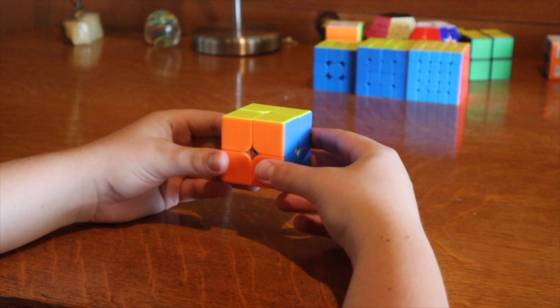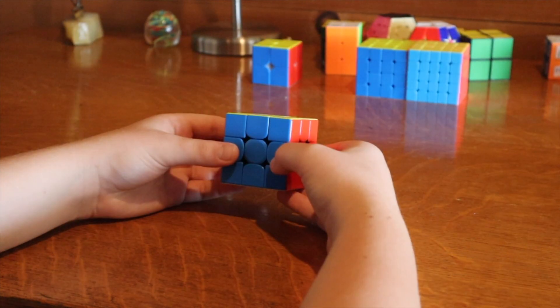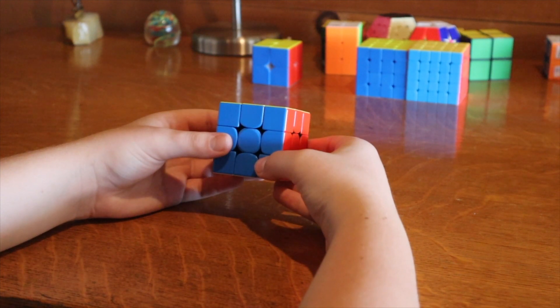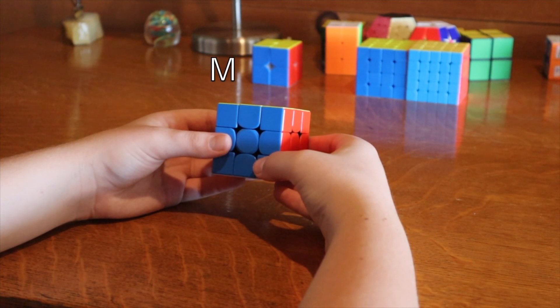These are all the turns used for a 2x2 Rubik's Cube. For 3x3, we use all of those turns and two more. Since there is now a middle layer, M is added to the letters.